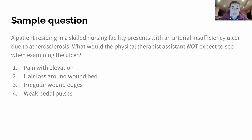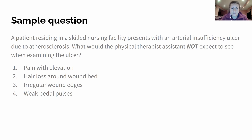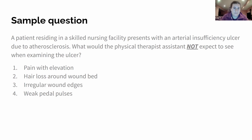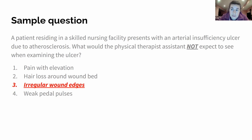Sample question: A patient residing in a skilled nursing facility presents with an arterial insufficiency ulcer due to atherosclerosis. What would the physical therapist assistant NOT expect to see when examining this ulcer? One: pain with elevation. Two: hair loss around the wound bed. Three: irregular wound edges. Four: weak pedal pulses. The answer is irregular wound edges, because that is a characteristic of a venous insufficiency ulcer, not an arterial one.